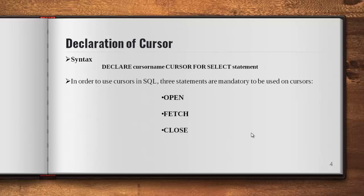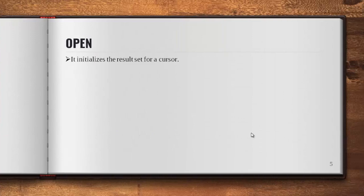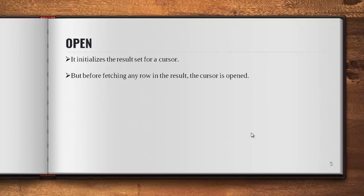OPEN initializes the result set for a cursor. Whenever you want to start using a cursor you have to open it first — before fetching any row, the cursor has to be open. The syntax for opening a cursor is simply: OPEN cursor_name.